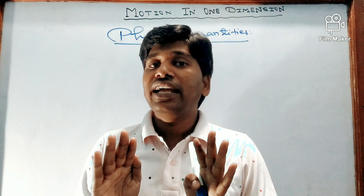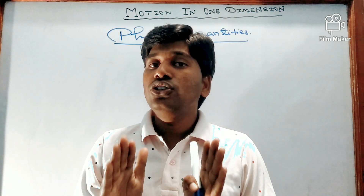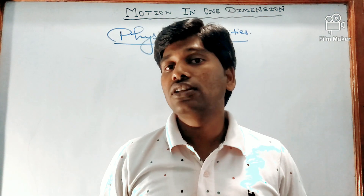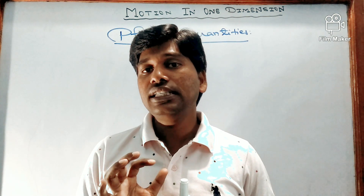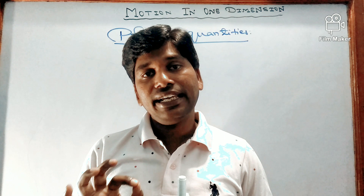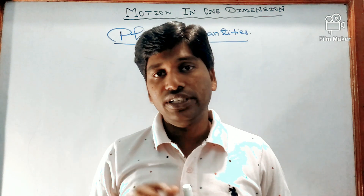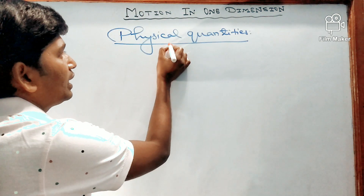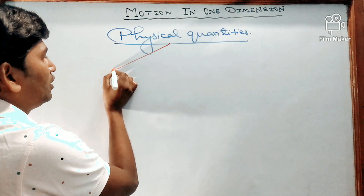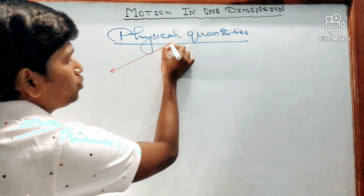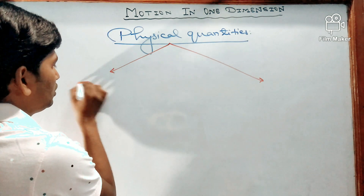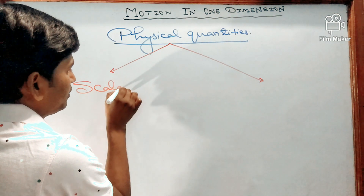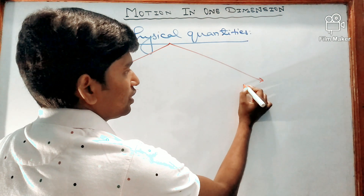Physical quantities can be classified into two categories: the first one is known as scalar quantity, and the second one is known as vector quantity.